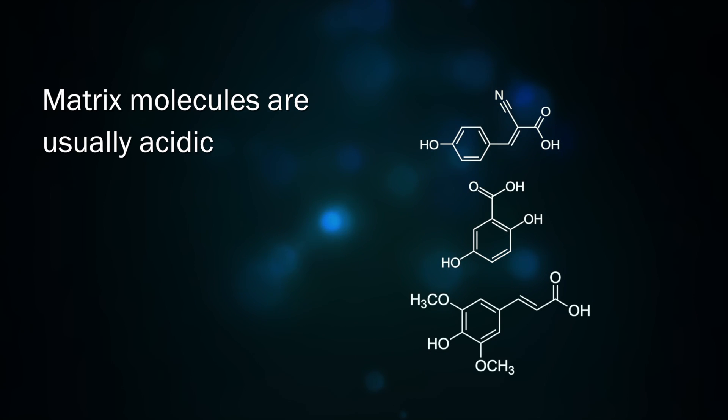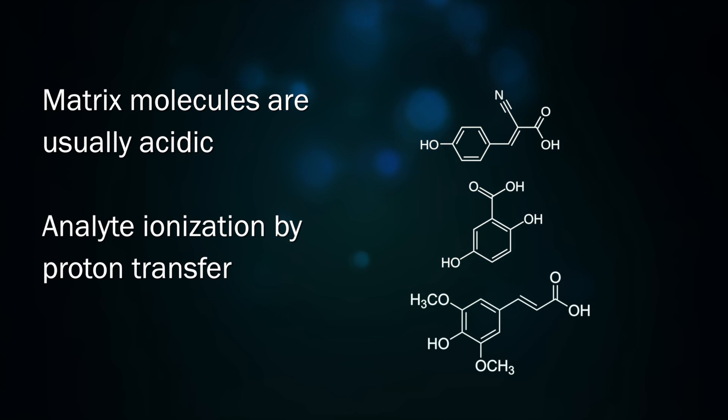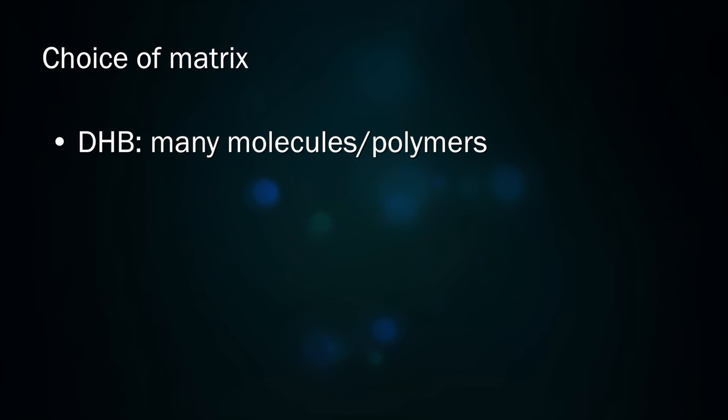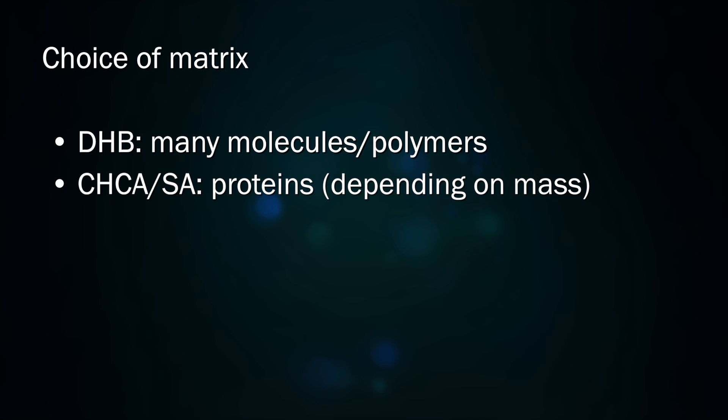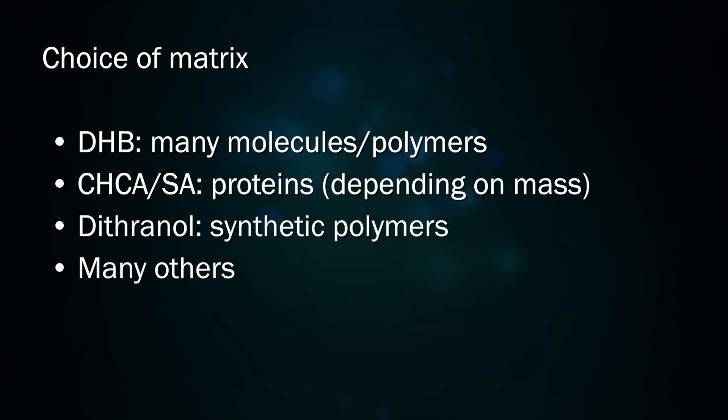Matrix molecules also tend to be acidic. This allows the analyte molecules to become ionized by a proton transfer from the excited matrix molecule. The matrix you use is mostly determined by the class of compound you are analyzing. DHB is very widely used, but CHCA, SA, and others can be used depending on your substance.